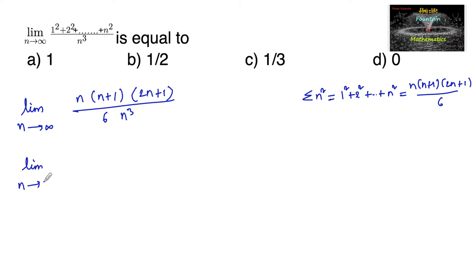And this can also be written as n into, in the second factor n plus 1 if I take n common, so I can write 1 plus 1 upon n, and the third factor if I take n common it is 2 plus 1 upon n, divided by 6 times n power 3. So here n into n into n, which is n power 3, gets cancelled with the denominator.